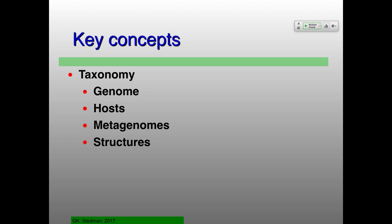Why do we care about taxonomy? It's not just about naming — if we can find common themes between all the different viruses, as Luria argued, that's why studying viruses is important. Genomes are a really good way to classify viruses, and we also think about hosts. Since viruses are so dependent on hosts, you often have coevolution between viruses and hosts. However, some viruses can hop from host to host, making this more confusing.